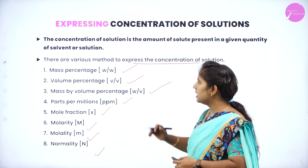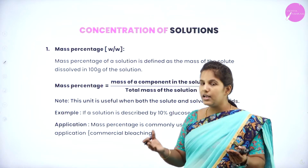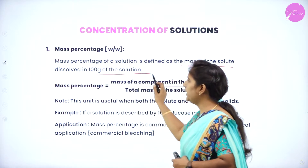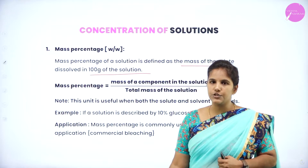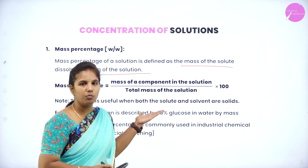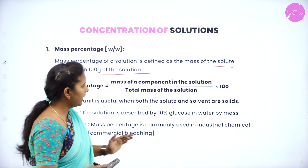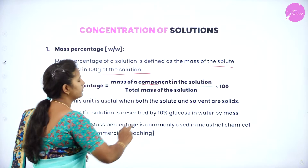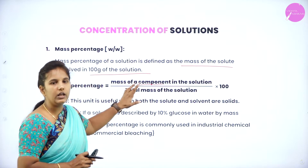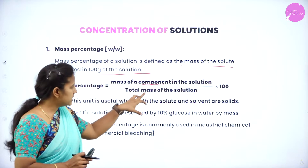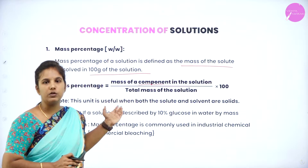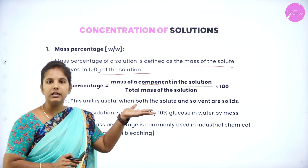Let us move on to mass percentage. Mass percentage can be defined as the mass of the solute dissolved in 100 grams of the solution. How to calculate this? You put the mass of the solute in solution divided by the total mass of the solution into 100. That gives the value for the mass percentage of the given solution.